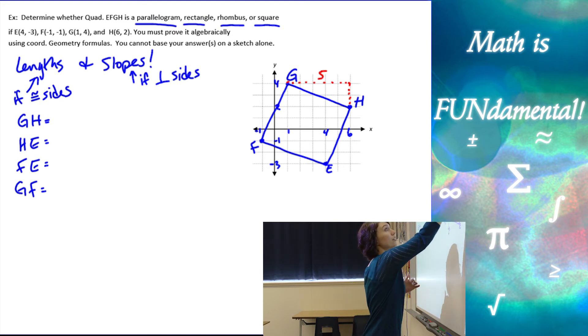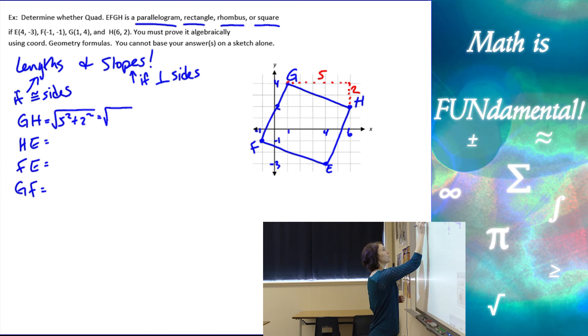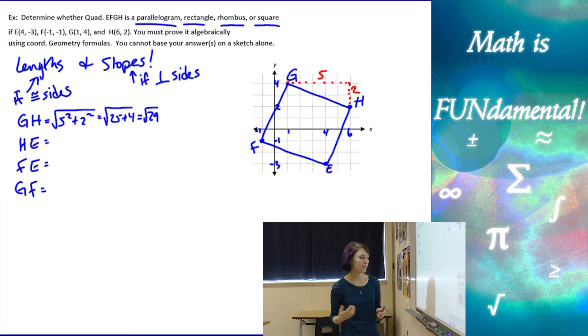Alright, and then this goes from four to two, so that's going to be two. So finding gh, I have the square root of five squared plus two squared, which is 25 plus four, which is 29. So square root of 29 for that one.